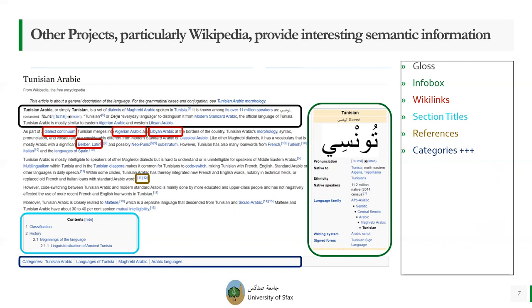For example, as you see here, a Wikipedia page can include a gloss, an infobox, wiki links, section titles, references, and among all, categories.